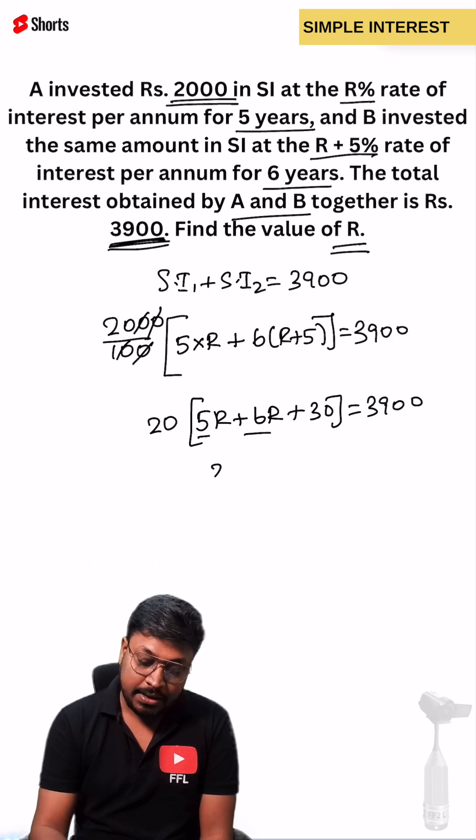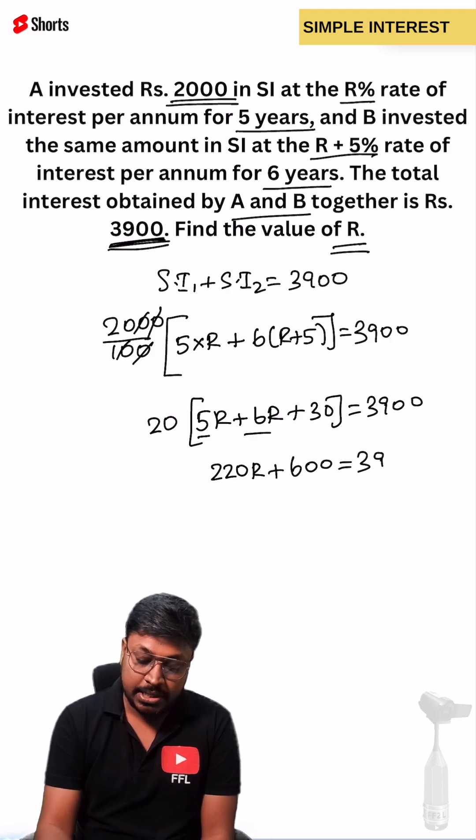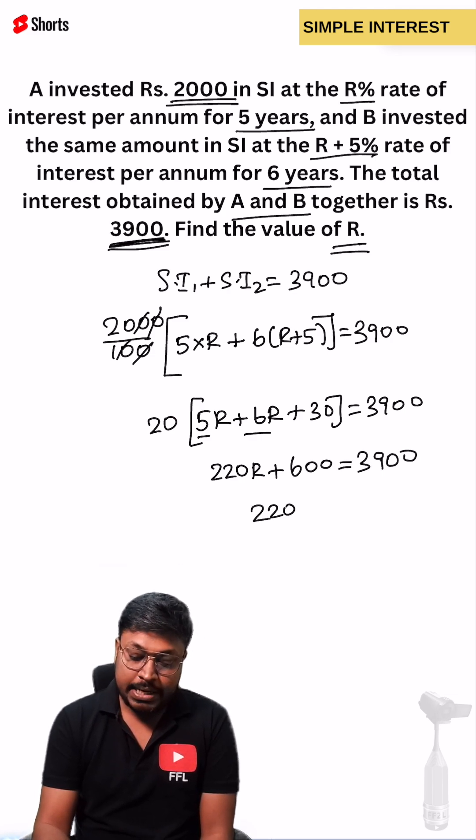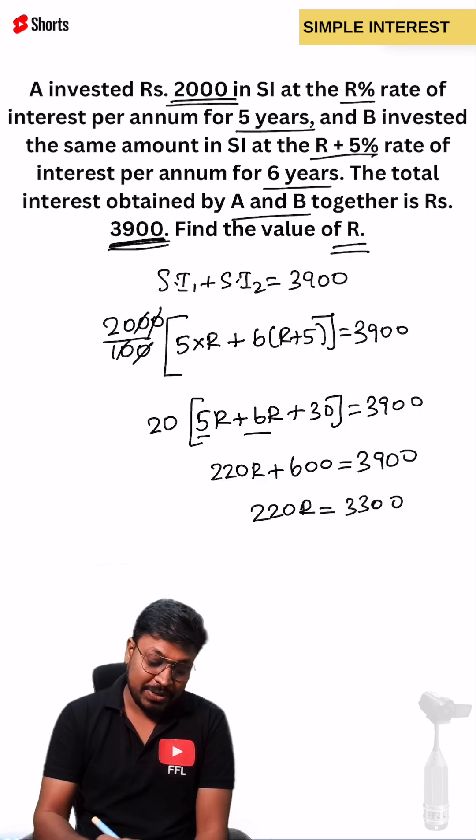This will be 11R which is 220R, and 600 equals 3900. So 220R equals 3300. When you subtract this and cancel the zeros.